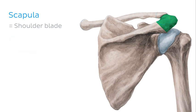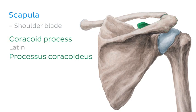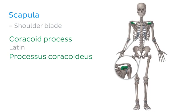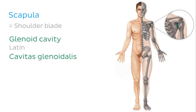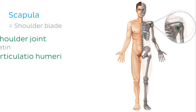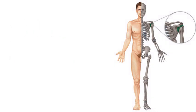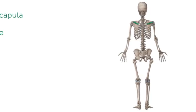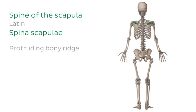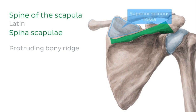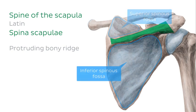Another feature of the scapula is the coracoid process, a hook-like bony projection situated superior to the glenoid cavity. The head of the humerus articulates with the glenoid cavity to form the shoulder joint. The spine of the scapula is a protruding bony bridge on the posterior surface of the scapula that is easily palpable and separates the superior spinous fossa from the inferior spinous fossa.